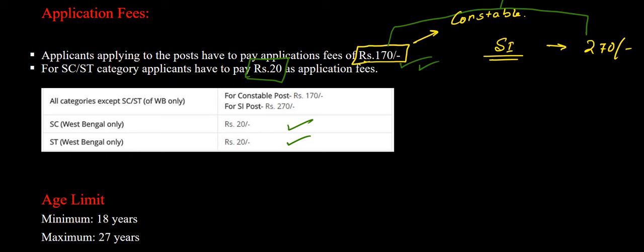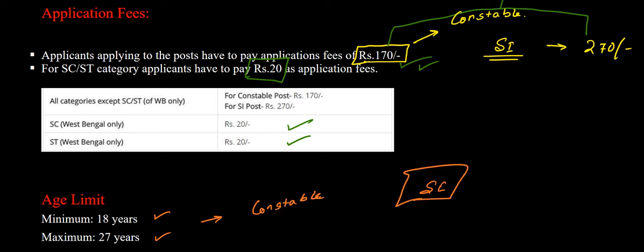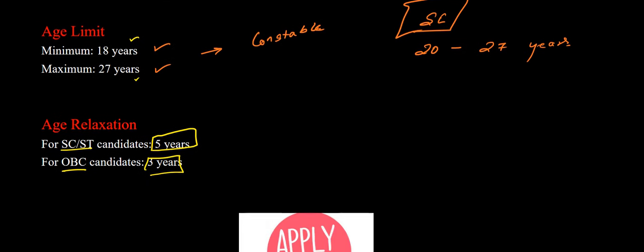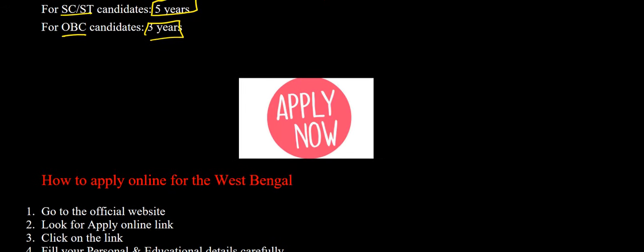To recap the age limit: for constable it is 18 to 27 years, and for sub-inspector it is 20 to 27 years. There are also age relaxations for reserved category candidates — SC/ST candidates get a relaxation of 5 years, and OBC candidates get 3 years of relaxation.